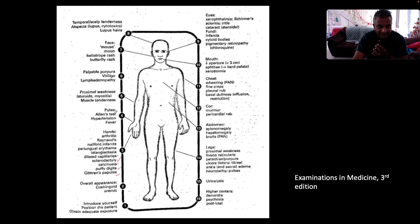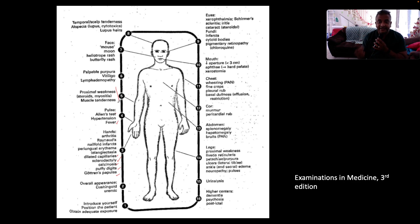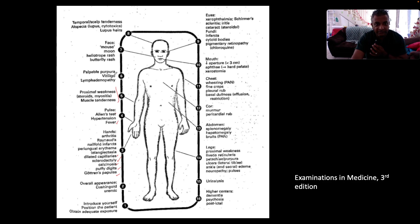Feel the pulse, do Allen's test, check for hypertension and fever. Always test for proximal weakness, which could be due to the disease process itself, concomitant myositis, or steroid use. Also test for muscle tenderness. Be on the lookout for palpable purpura and vitiligo, because lupus, being an autoimmune condition, keeps company with other autoimmune conditions like vitiligo and nephropathy.